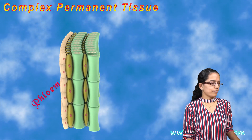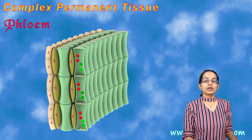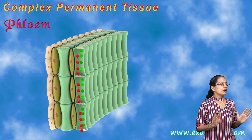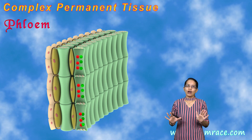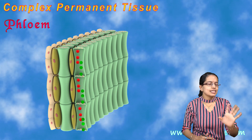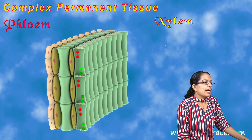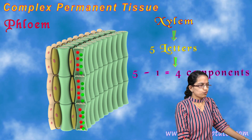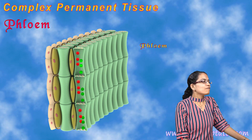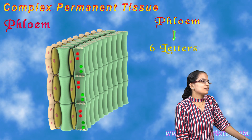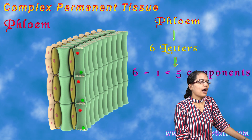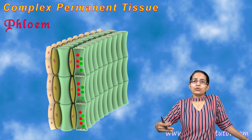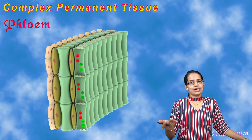Xylem has four components, while phloem has five components. An easy way to remember: xylem has five letters, so it is made up of five minus one — that's four. Phloem is made up of five components.